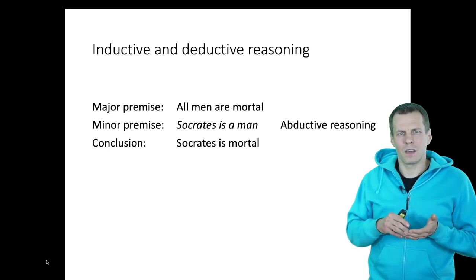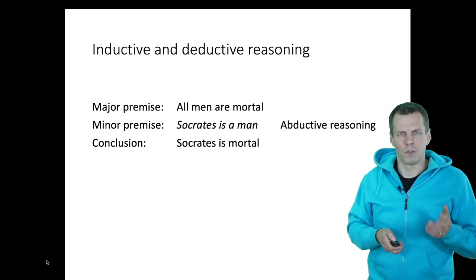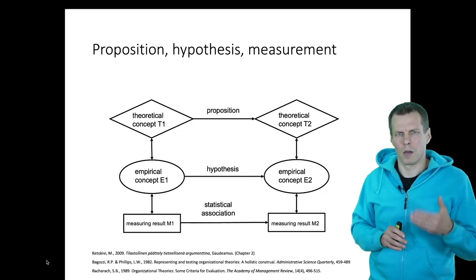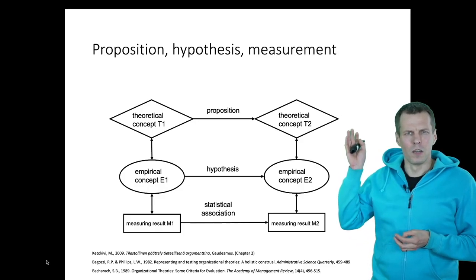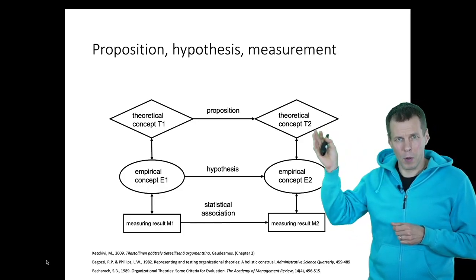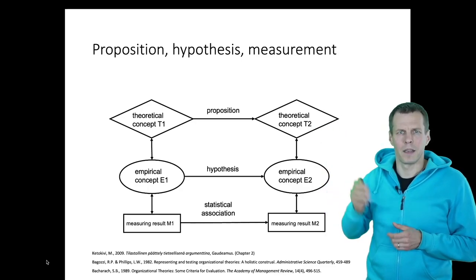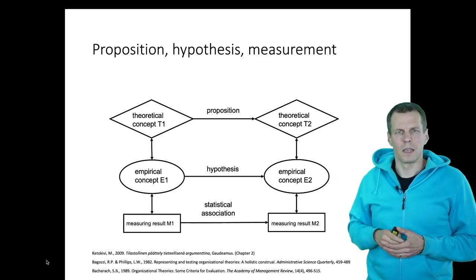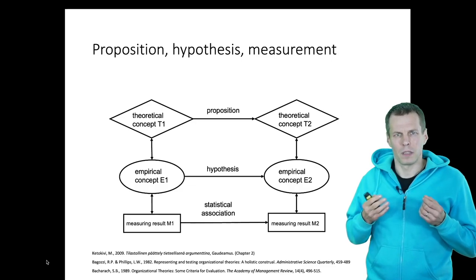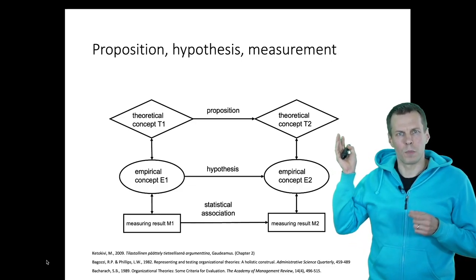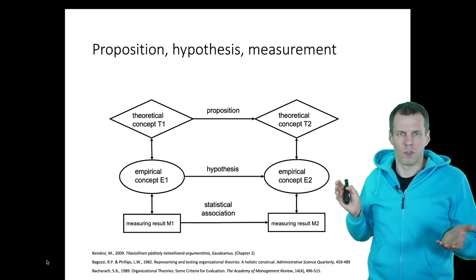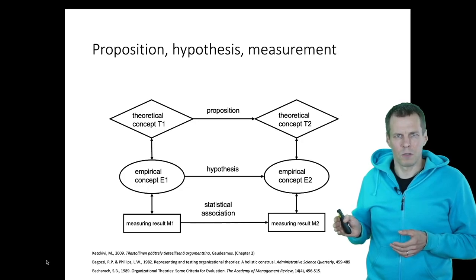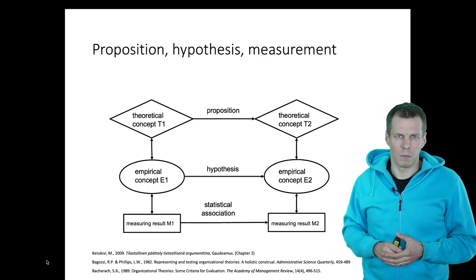So how do inductive, deductive, and abductive logic link to research? Let's look at this figure from Ketokkivi's book, adopted from Baccarat. We have theoretical concepts and propositions — theoretical statements linking those concepts. Then we have hypotheses linking empirical concepts, which are things we can actually observe. For example, if the theoretical concept is performance, the empirical concept might be return on assets (ROA). Then we have measurement results specific to some data, and statistical associations calculated from those data.